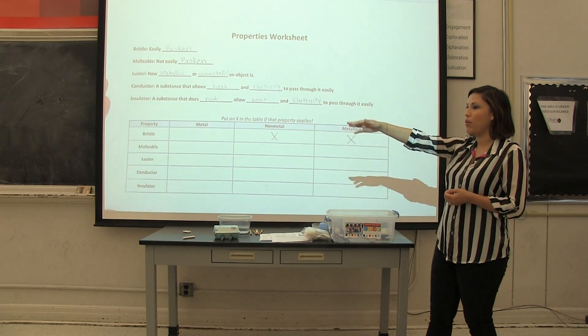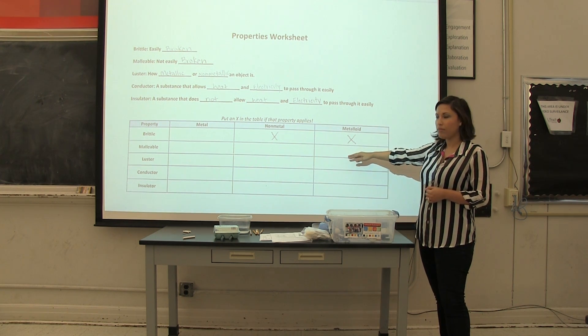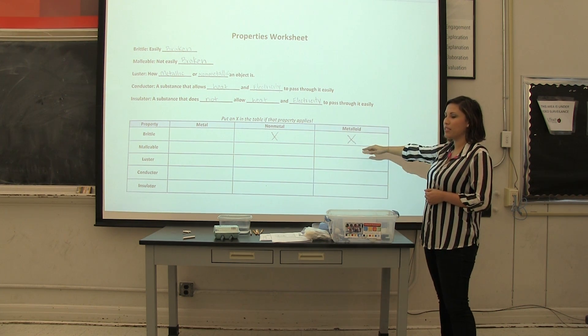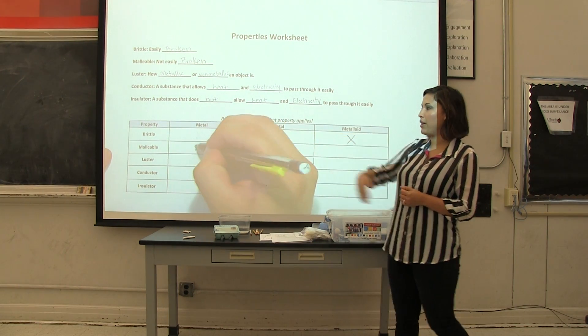All right. So malleable. Clara, what did you and your shoulder partner get for that? Metals. Metals. Are there any others? No. All right, very good. We're going to... you should have an X under that one.